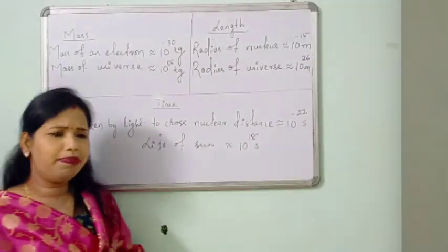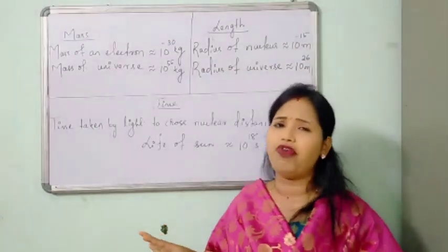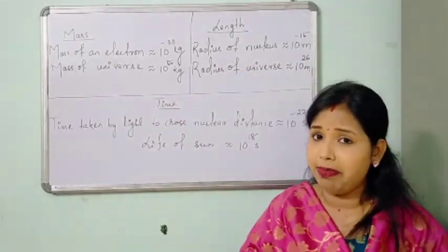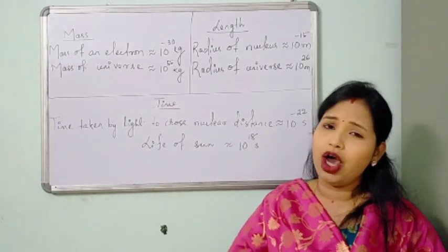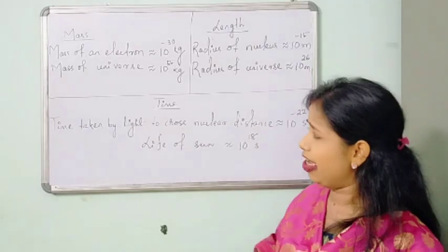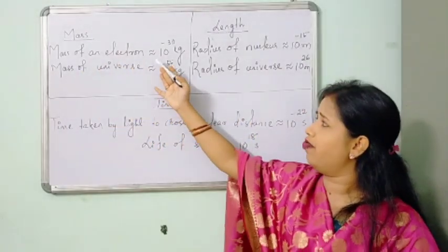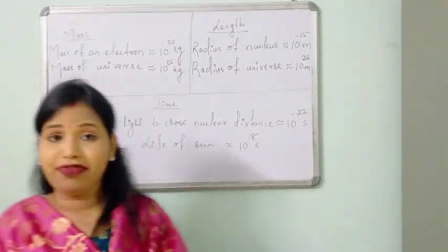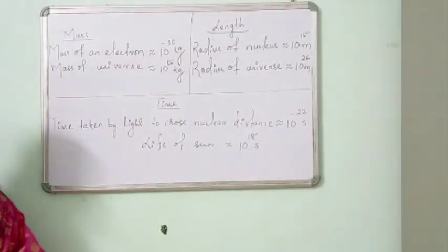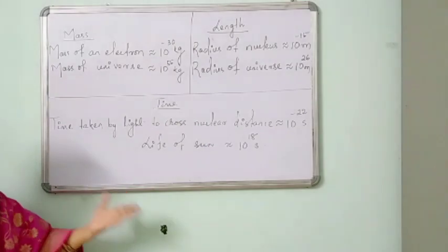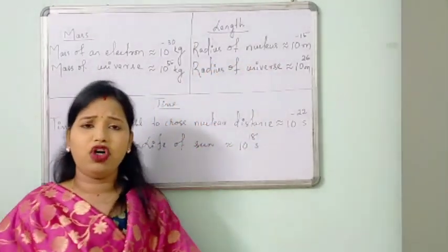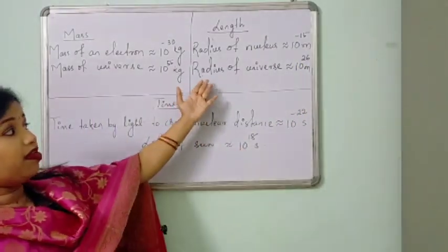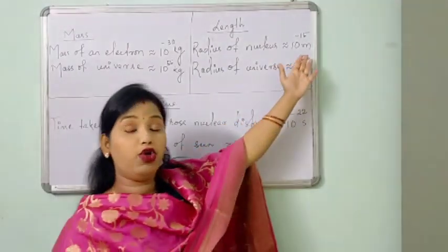In our daily life we come across some fundamental quantities like mass, length, time, etc. I will give you some examples and you can imagine what is the scope of physics. Mass of an electron is of the order of 10 to the power minus 30 kg, but mass of the universe is of the order of 10 to the power 55 kg. See how mass varies! Similarly, radius of a nucleus is of the order of 10 to the power minus 15 meter, which is also known as fermi, and radius of the universe is of the order of 10 to the power 26 meter.